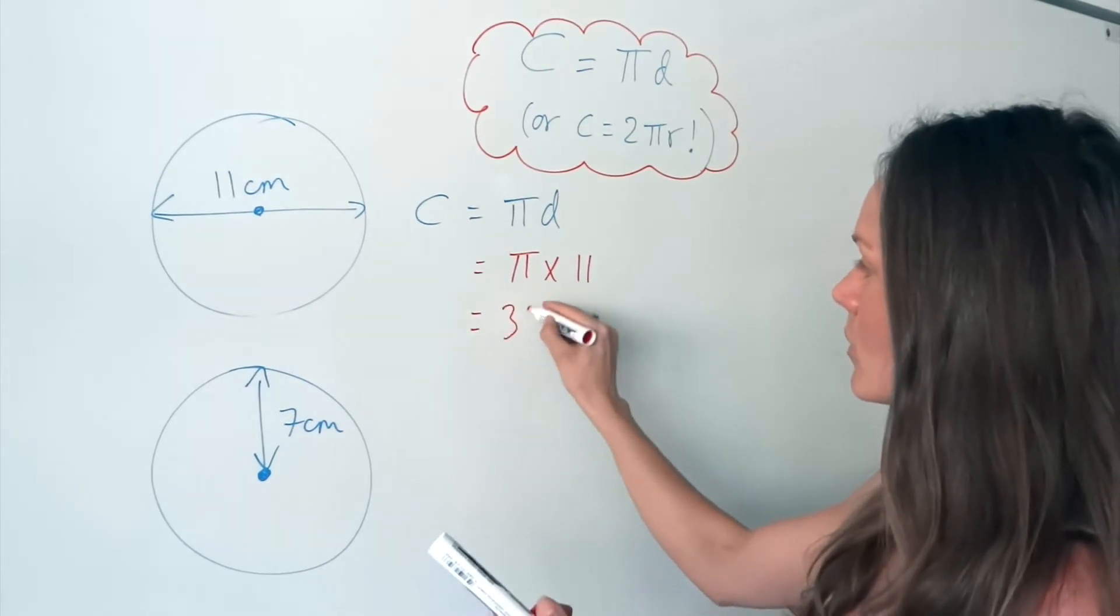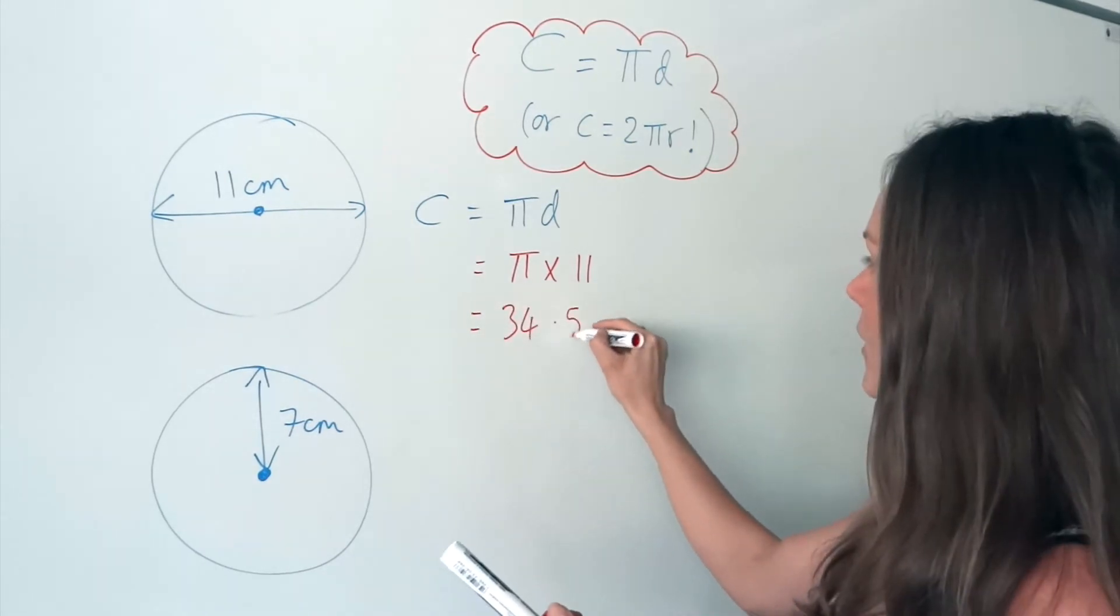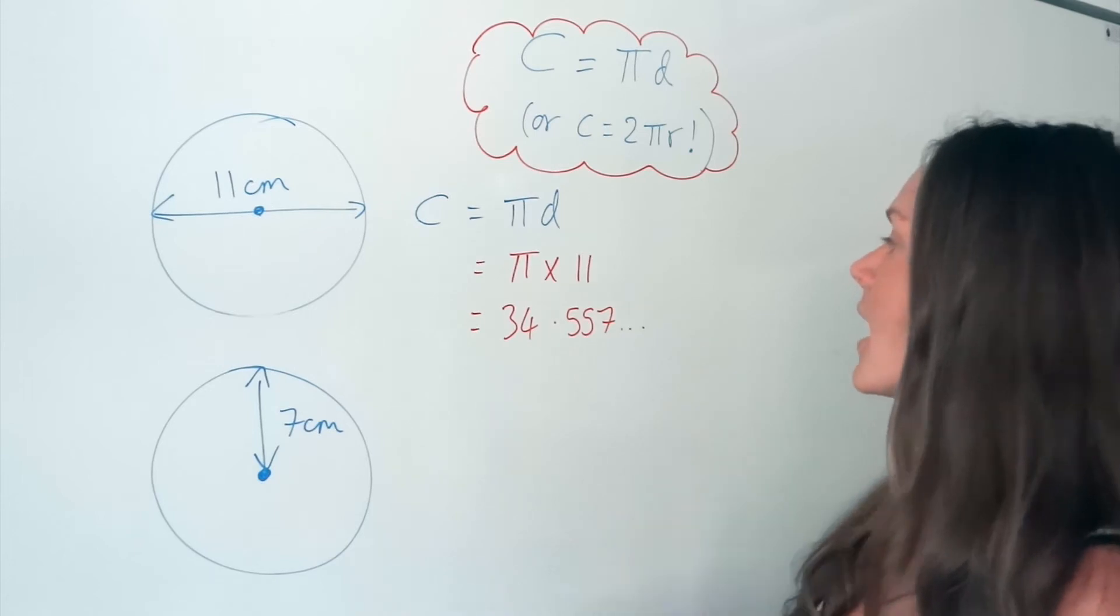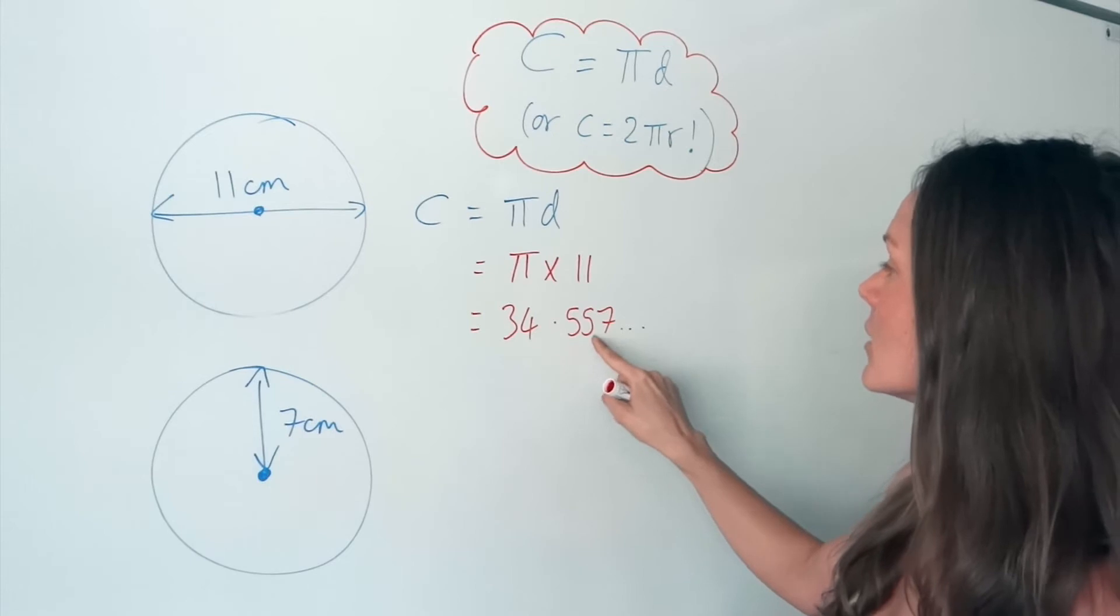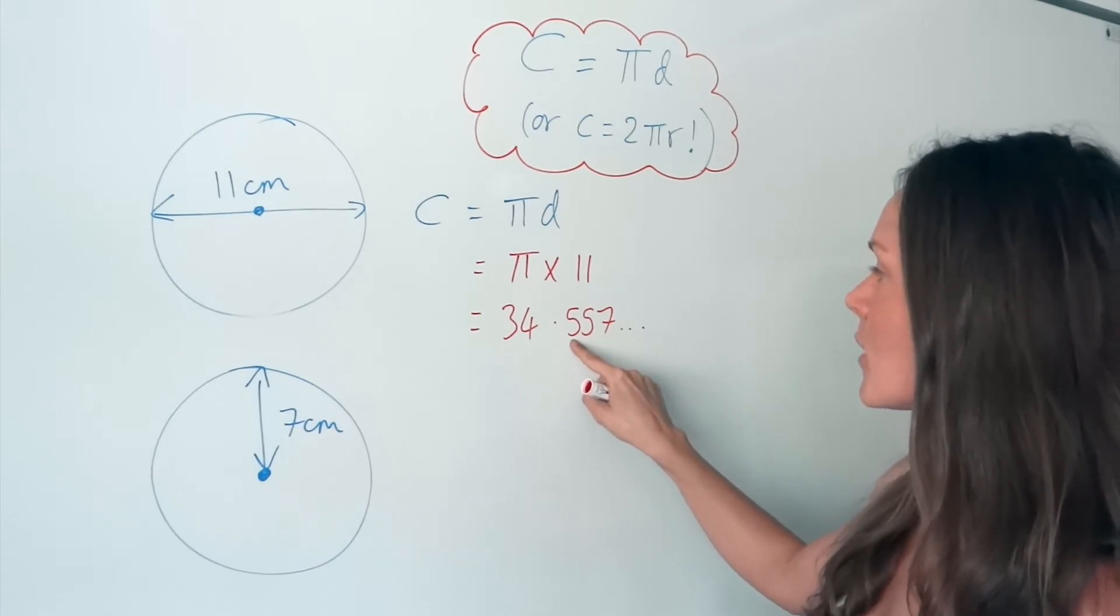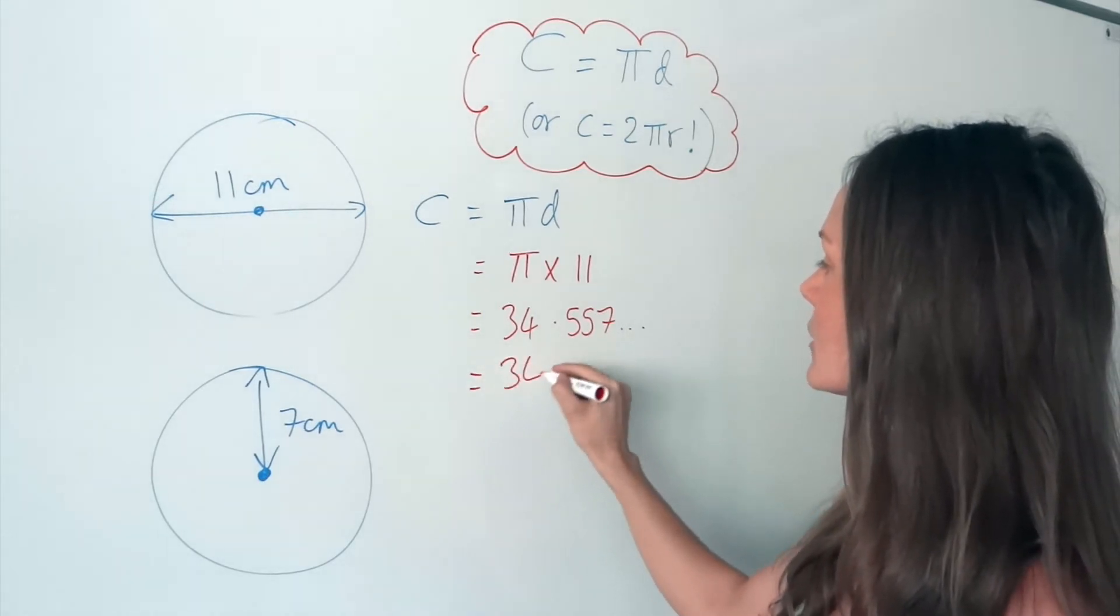Okay, so find pi on your calculator and multiply by 11. That should give you 34.557 dot, dot, dot. And I'm going to round that to one decimal place. So after the decimal here, look at this 5, it rounds the other 5 up to 6, so it's 34.6.